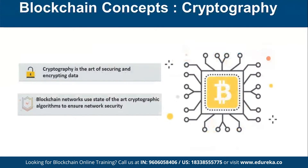Cryptography is the way of securing and encrypting data. Blockchain uses a lot of cryptographic algorithms to ensure network security, because when you're distributing data across the internet you need to ensure the data can be trusted and hasn't been tampered with. Blockchain uses techniques such as public-private key methods and digital signatures to verify that data has not been tampered with by someone.